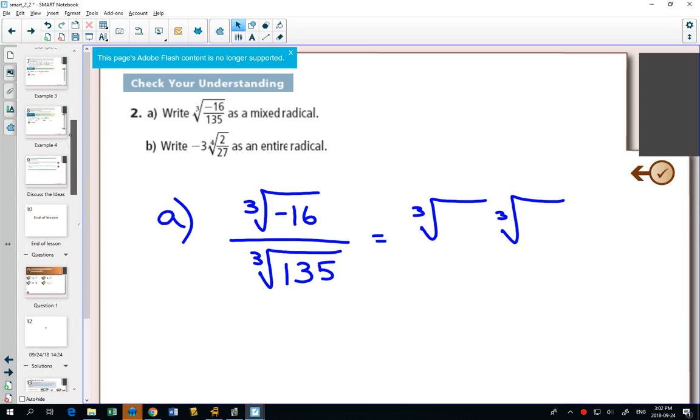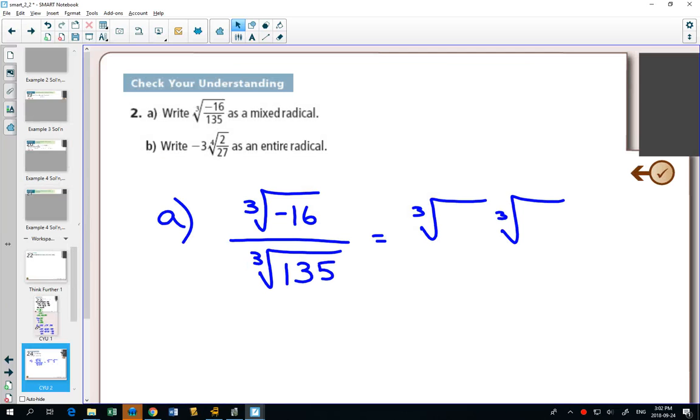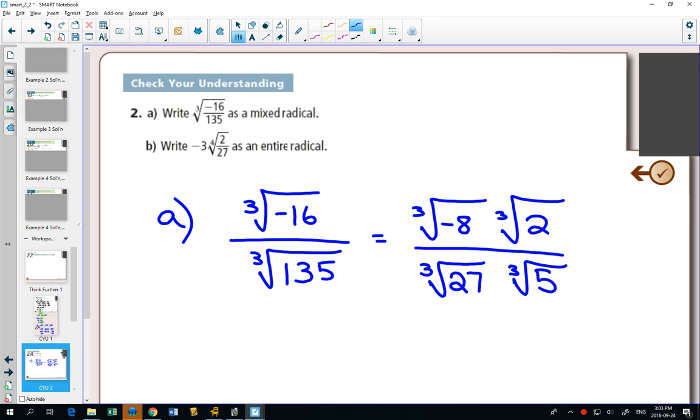And in order for us to simplify this, to write this as a mixed radical, we have to think, what times what is 16? And one of them, because we're doing cube roots, has to be a perfect cube. So if we go to our chart and we look at the perfect cubes, there's not that many that we needed to know without our calculator. Perfect cubes are 8, 27, 64, and 125. Do any of those numbers divide 16? 8 does.